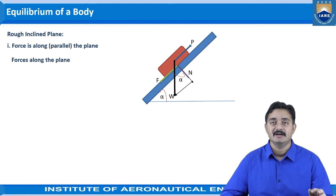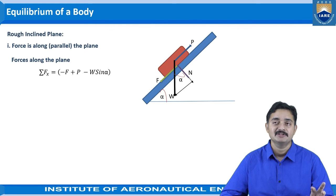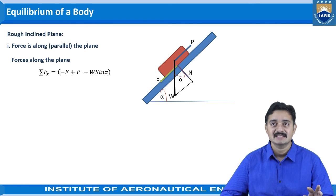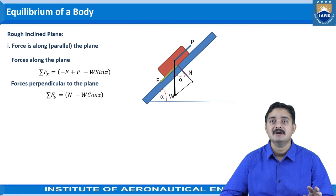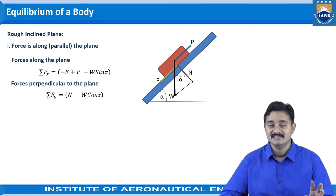For forces along the plane, the equilibrium condition sigma Fx considers frictional force F, applied force P, and the along-the-plane component of W. Since F and W sin alpha act in the negative direction while P acts in the positive direction, we write: sigma Fx equals minus F plus P minus W sin alpha. For forces perpendicular to the plane, sigma Fy gives N in the positive direction and W cos alpha in the negative direction, so sigma Fy equals N minus W cos alpha.